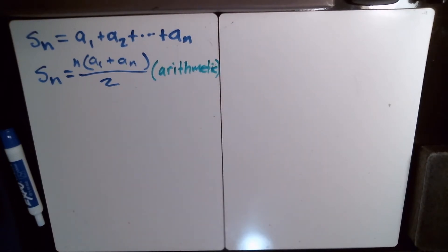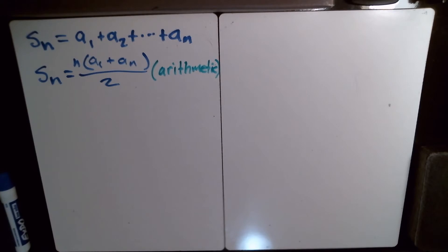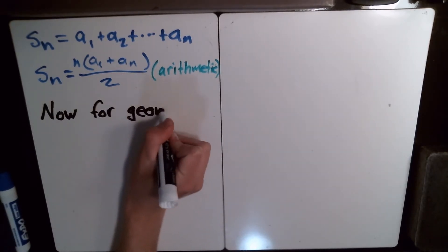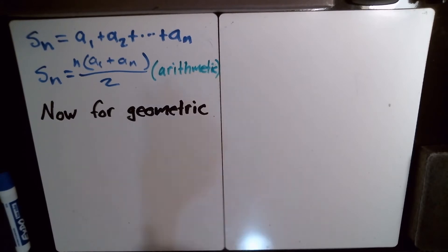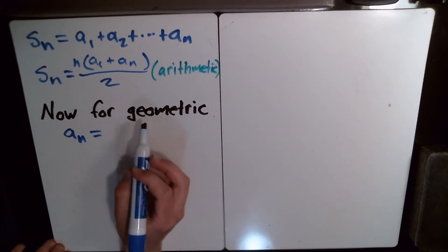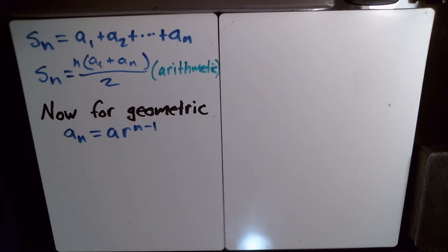So we're going to do the same thing for geometric, and I'm going to actually derive how you get the formula for this one. It's kind of a clever trick. For a geometric sequence, the general term is of the form a times r to the n minus 1 — that's our formula for the geometric sequence.